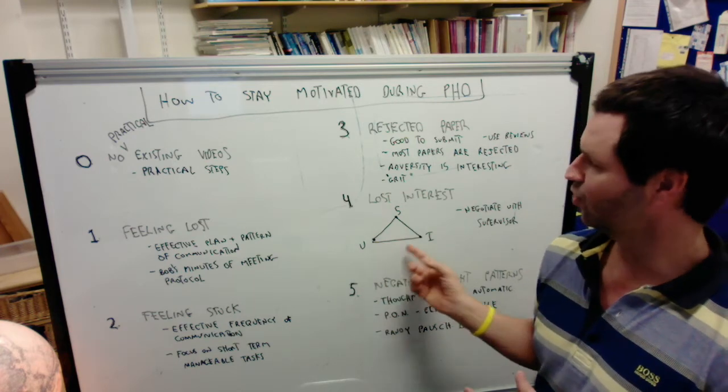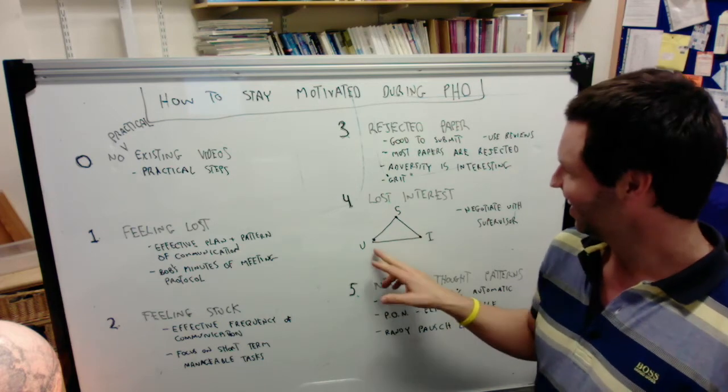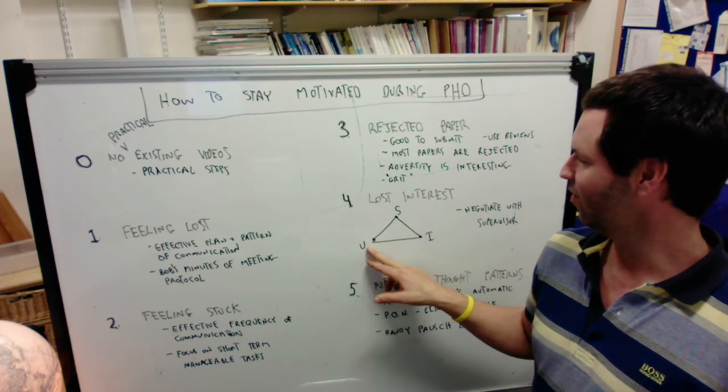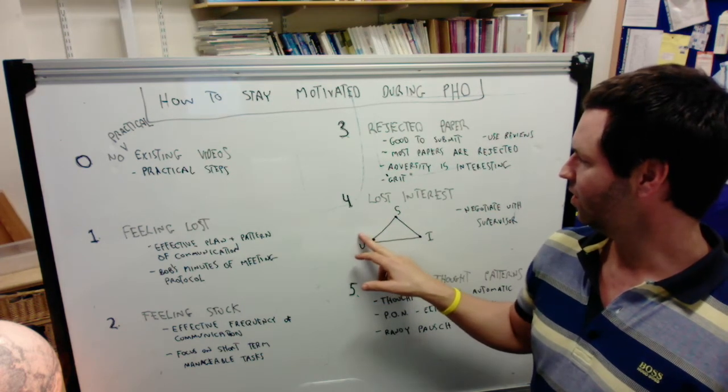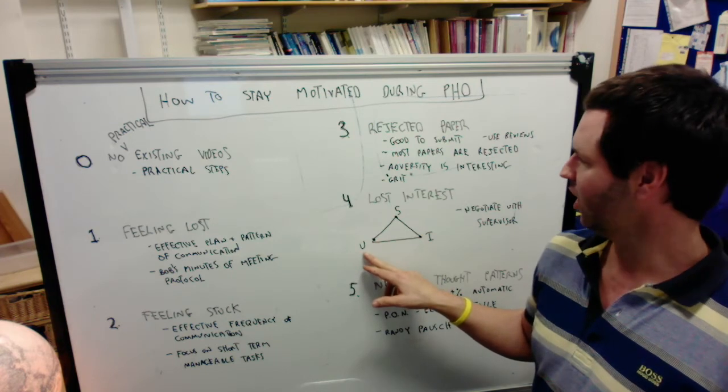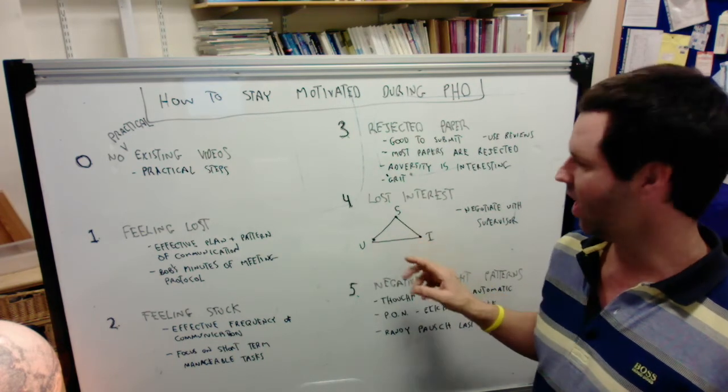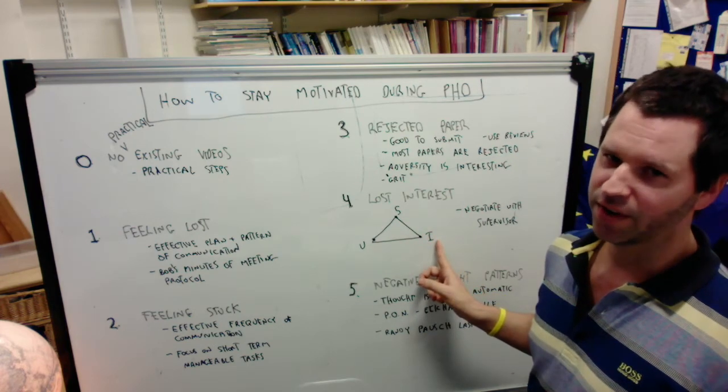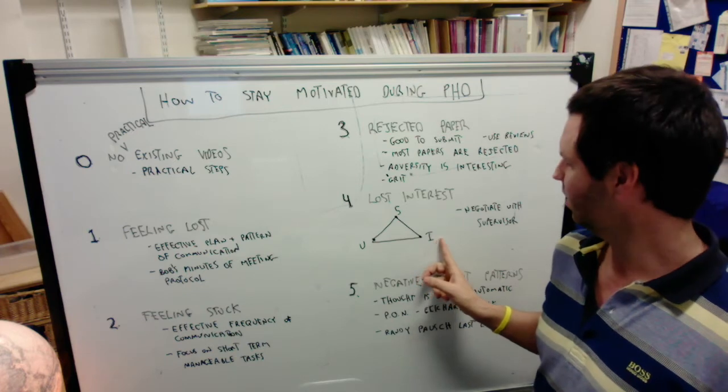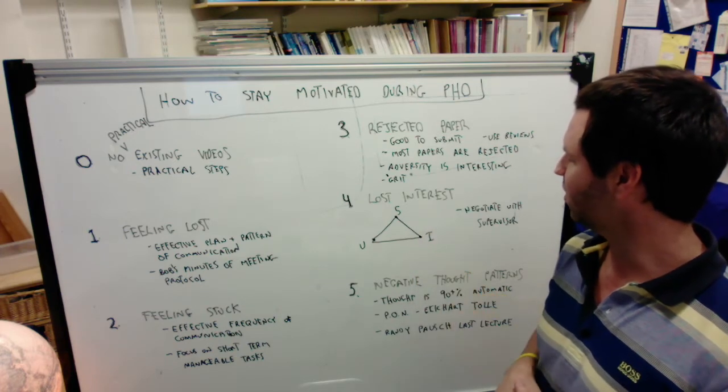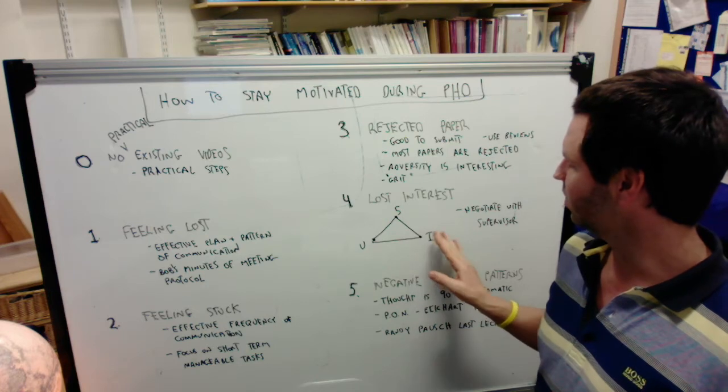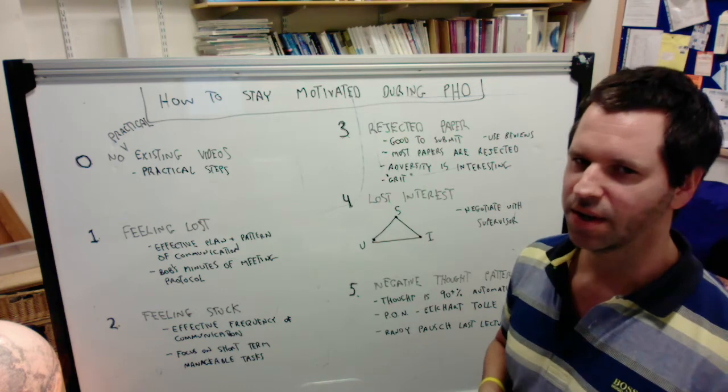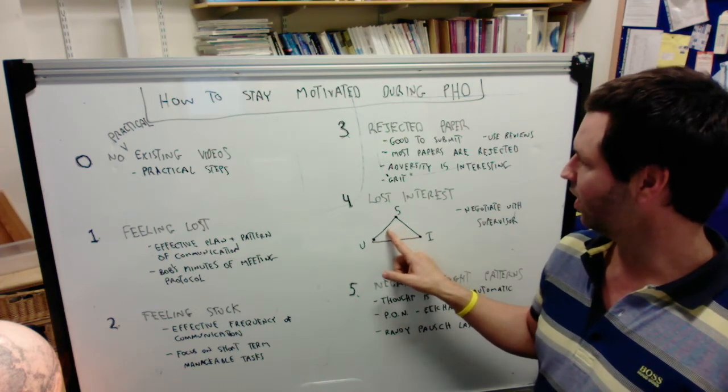For this, I've actually drawn a diagram. It's a triangle. It has three corners, or vertices. This is you, the PhD candidate. That's your supervisor and that's the institution, the host institution where you're studying or the funding agency that is funding your PhD studies, one or the other.